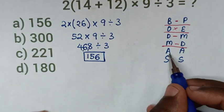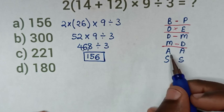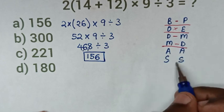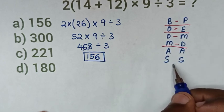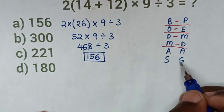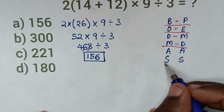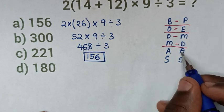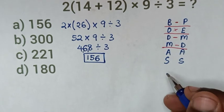From the last step, if we have addition first, we start with addition, then subtraction. Or if we have subtraction first, we start with subtraction, then addition. But here we don't have addition or subtraction.